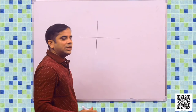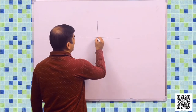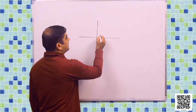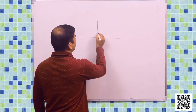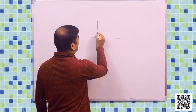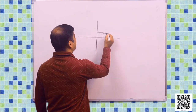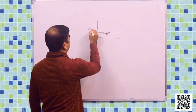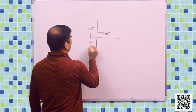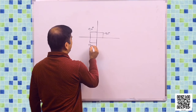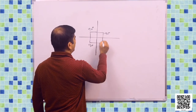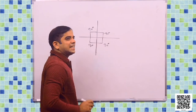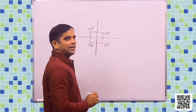As we know, the total angle around a point is 360 degrees. So this is the first quarter having 90 degrees, second quarter having 90 degrees, third quarter having 90 degrees, and fourth quarter having 90 degrees. So total 360 degrees around a point.